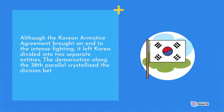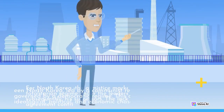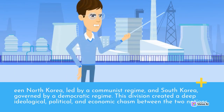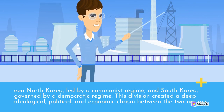Although the Korean Armistice Agreement brought an end to the intense fighting, it left Korea divided into two separate entities. The demarcation along the 38th parallel crystallized the division between North Korea, led by a communist regime, and South Korea, governed by a democratic regime. This division created a deep ideological, political, and economic chasm between the two nations.